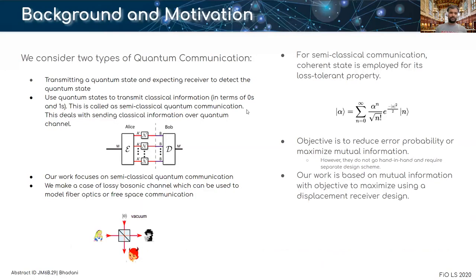We consider two types of quantum communication: transmitting a quantum state and expecting receiver to detect quantum state. Then the second one is use of quantum states to transmit classical information. This is called semi-classical quantum communication.